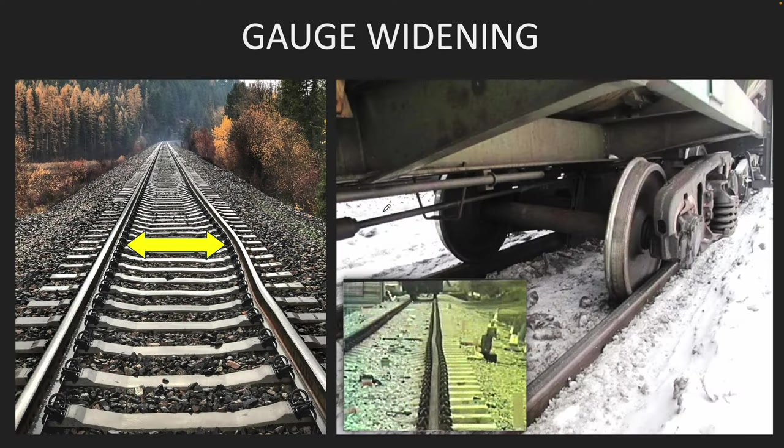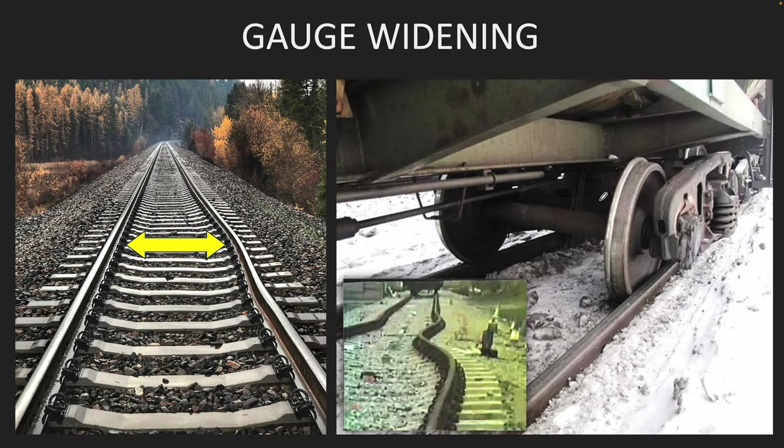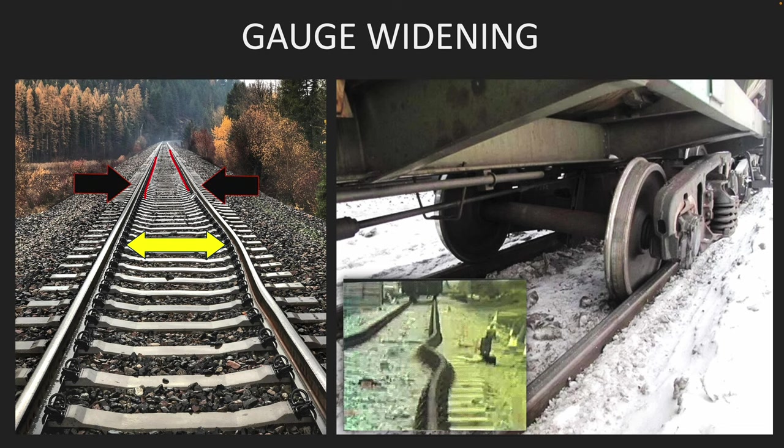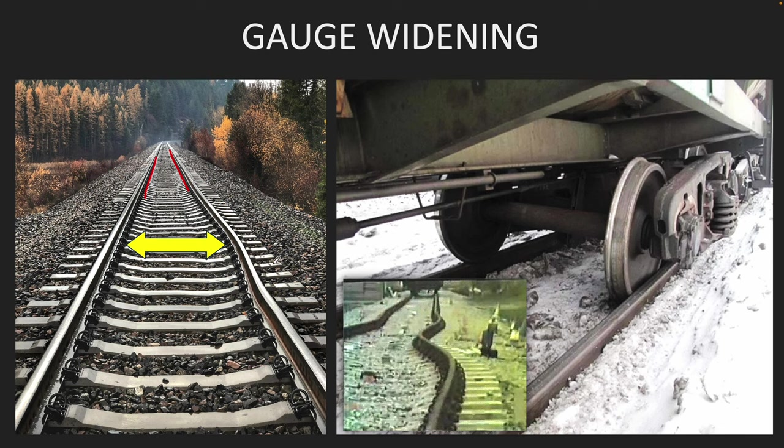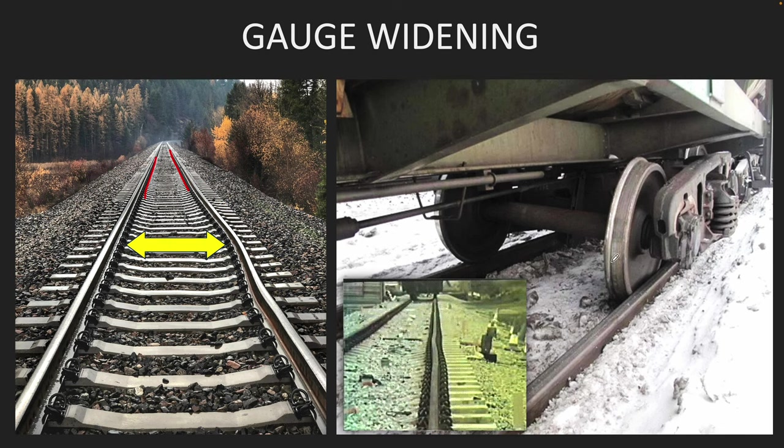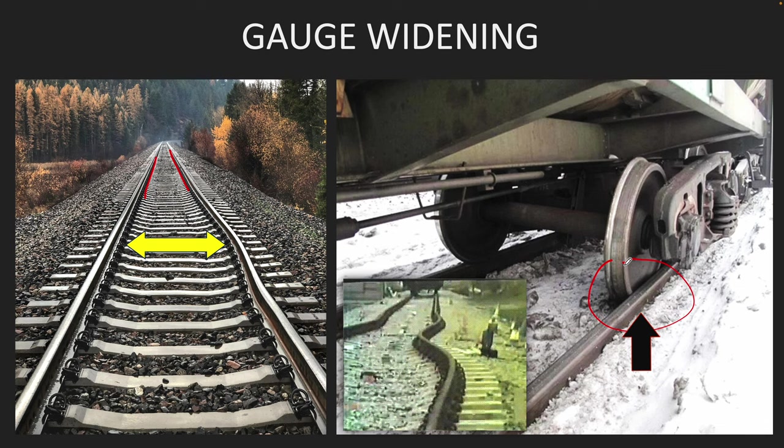Let's see why these derailments happen. For trains to run safely on tracks, the two running rails have to be at a certain distance, not any more or any less. If the distance increases, your wheel will drop and your train will derail.